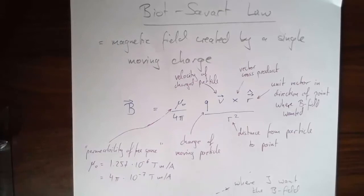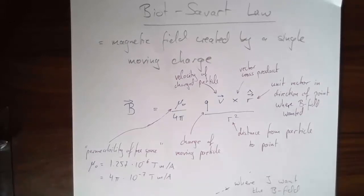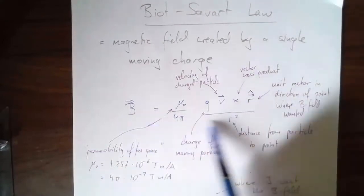Here's how this works. The Biot-Savart law fundamentally gives me the magnetic field created by a single moving charge. Remember, magnetic fields affect moving charges and create forces on them — we'll talk about that in the next video, part four. But a moving charge, like a proton flying by me, creates a magnetic field given by this equation.